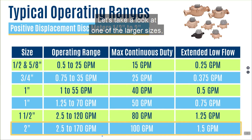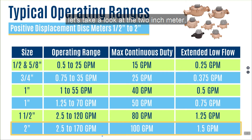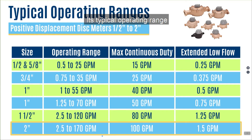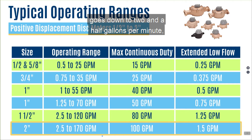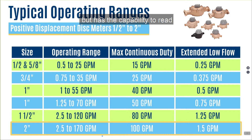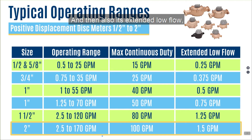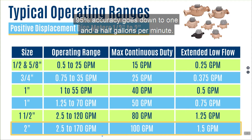Let's take a look at one of the larger sizes — the two-inch meter. For a positive displacement nutating disc, even a two-inch meter is very accurate at low flow. Its typical operating range goes down to two and a half gallons per minute, with the capability to read all the way up to 170 gallons per minute. Its maximum continuous duty is 100 gallons per minute, and its extended low flow at 95% accuracy goes down to one and a half gallons per minute.